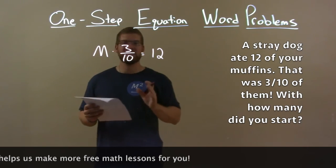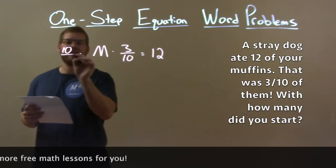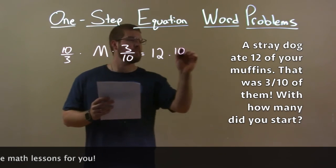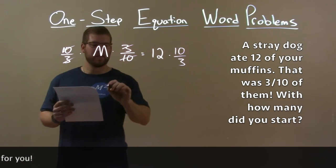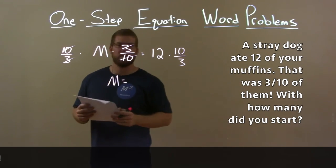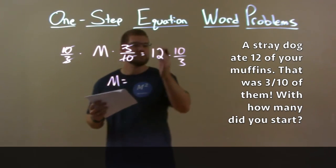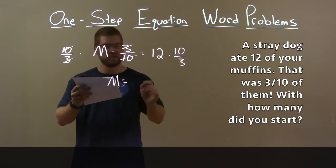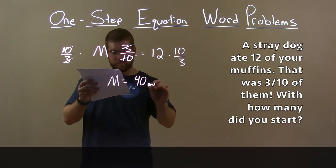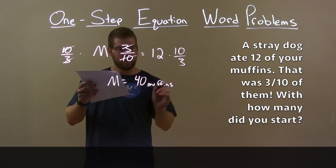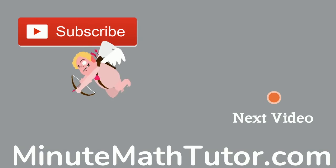We're multiplying by 3/10, so to eliminate that, multiply both sides by the reciprocal, 10/3. The 3/10 cancels on the left, giving M by itself — the total number of muffins we started with. 12 times 10/3 comes out to be 40, so 40 muffins is how many we had before the stray dog ate 12 of them.